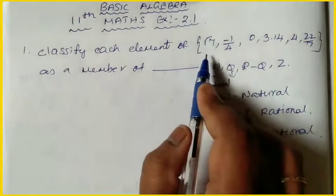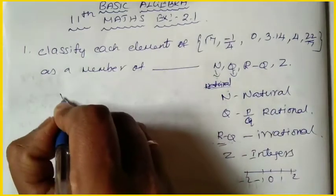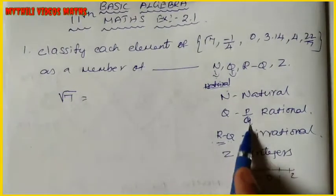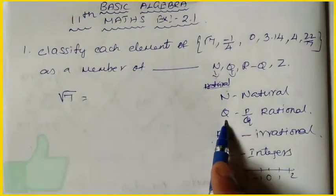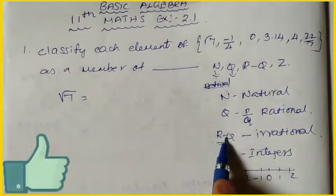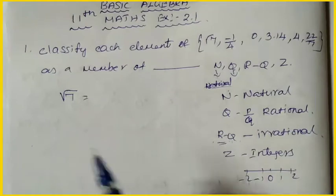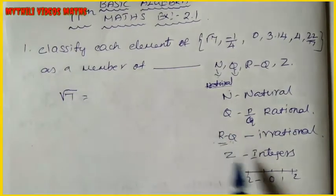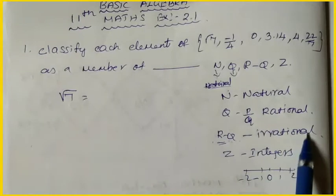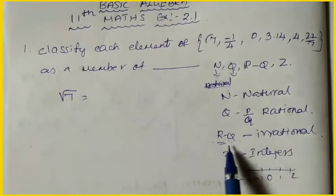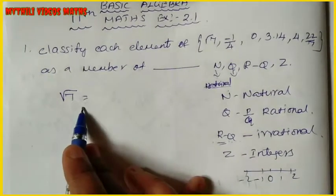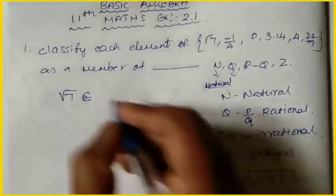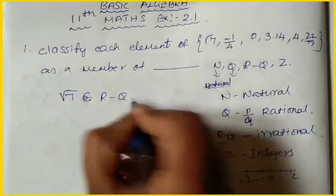First of all, we write √7. The P by Q format is the rational number, but √7 cannot be written in that form. So √7 belongs to the irrational numbers — √7 belongs to R minus Q.